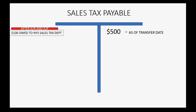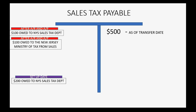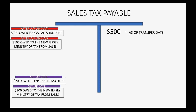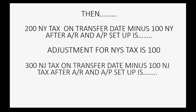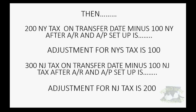For example, let's imagine that after the accounts receivable and accounts payable setup, $100 is owed to New York State sales tax department, but we know as of the transfer date it's really $200. And after AR and AP were set up, $100 is owed to New Jersey tax, but we know it's really $300 as of the transfer date. So $200 New York tax minus $100 after AR and AP setup means the adjustment for New York is $100. And $300 New Jersey tax minus the $100 remaining from AR and AP setup means you would adjust New Jersey for $200. That's the only difference from the demonstrated example.